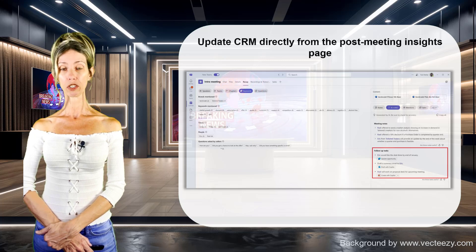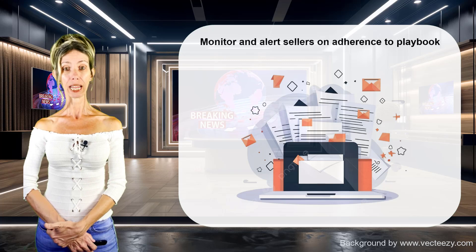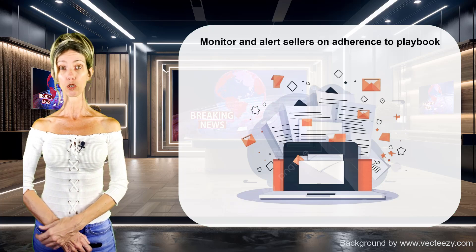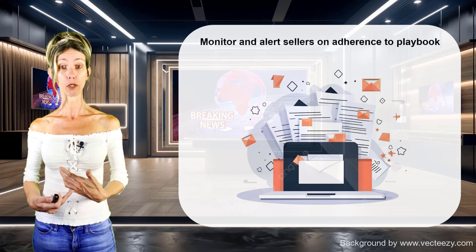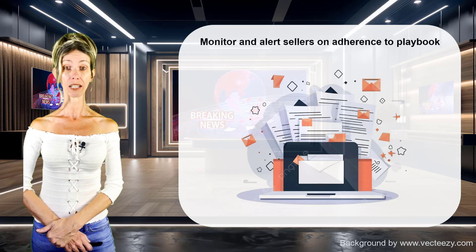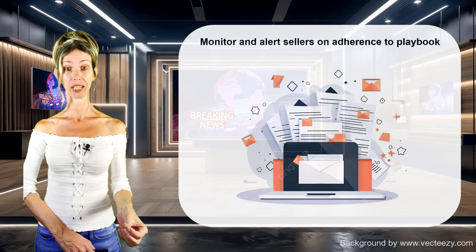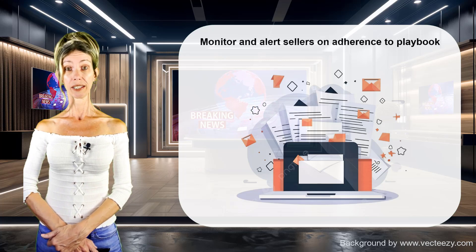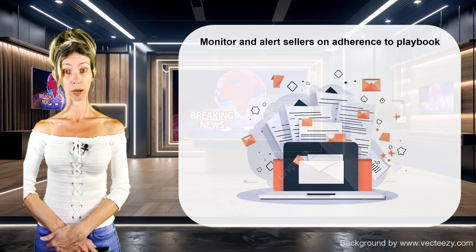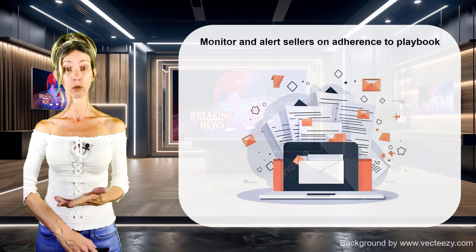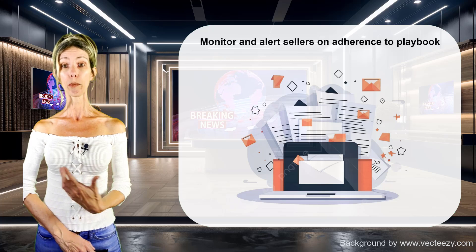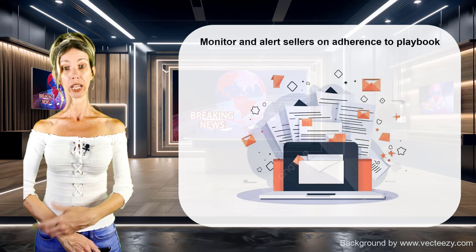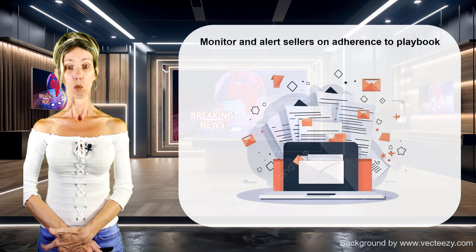The way this functionality is explained in the release notes is that sales managers can upload a playbook document — at least I'm assuming it's going to be a document — for sellers to use during their meetings. I know for a fact it is not the playbook table we had previously, because that's gone. Copilot for Sales will monitor how well sellers adhere to the playbook by keeping track of the things that were discussed, and at some point the seller will receive feedback on things they missed and things they did well when it comes to following that playbook.